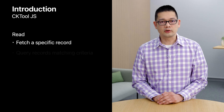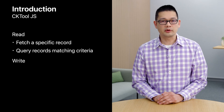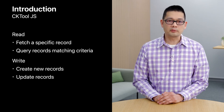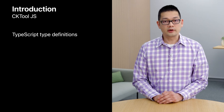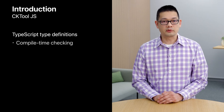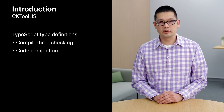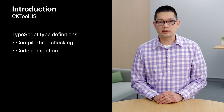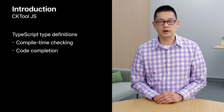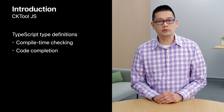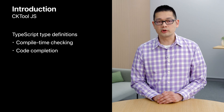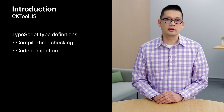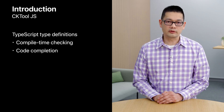cktool.js lets you fetch existing records using their unique identifier or through complex queries, and it lets you create new records and update them. cktool.js ships with strict type definitions for TypeScript. These type definitions enable compile-time checking that flags incorrect usage of the client library, and it enables code completion in supported IDEs. You'll find editing cktool.js code easier because of this.